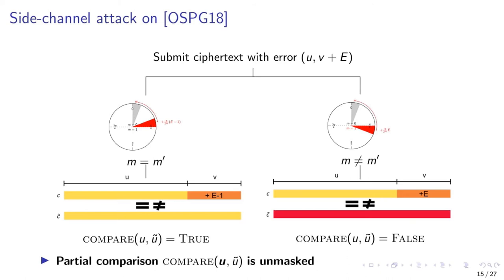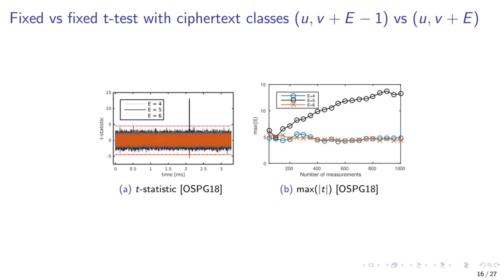We mount our attack as a simple fixed versus fixed t-test, where both fixed classes are the ones we just talked about: one class with error e-1, and another with error e. We collect side-channel traces from either class, partition them into the classes, and compute the t-statistic. We show the t-statistic after as little as 1,000 measurements for errors e equals 4, e equals 5, and e equals 6, and also the evolution of the t-statistics throughout these measurements. When e equals 4, both e and e-1 do not cause a bit flip. When e equals 6, both e and e-1 cause the bit to flip. Exactly when e equals 5, both classes of measurements are different.